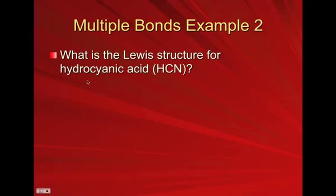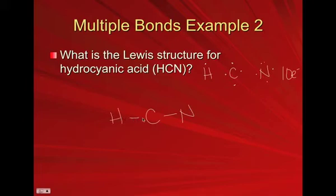Doing another example. Lewis structure for hydrocyanic acid. Formula is HCN. Draw your Lewis structure or your electron dot structures first for H, C, and N. H gets one dot, carbon gets four, nitrogen gets five. Add them all up. You have ten electrons that you're dealing with. Whenever you have a carbon, it automatically goes in the middle, other elements on the outside. Now subtract your bonded electrons from your total. We have four bonded electrons here. So now we're down to six.